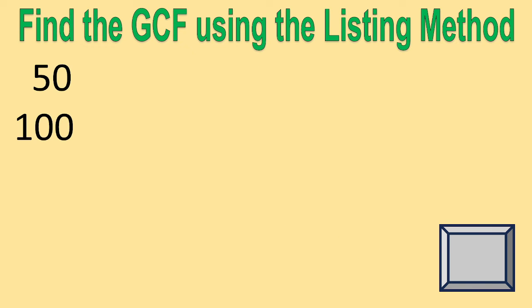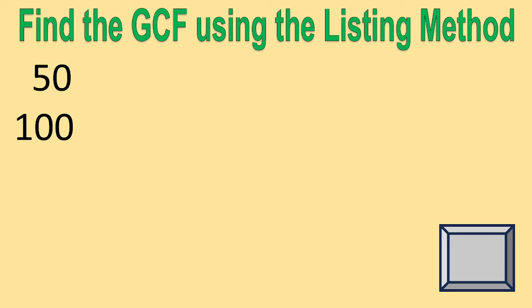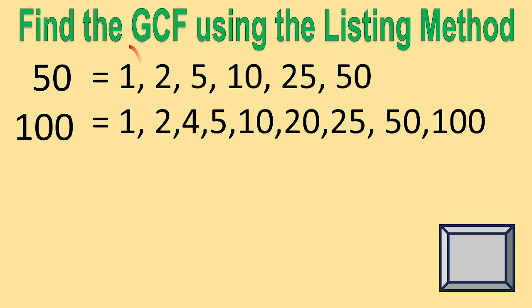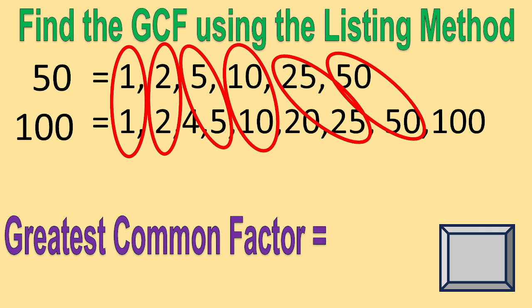50 and 100. Time's up. The greatest common factor is 50.